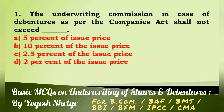Question 1: The underwriting commission in case of debentures as per the Companies Act shall not exceed — (a) five percent of issue price, (b) ten percent of issue price, (c) two point five percent of the issue price, (d) two percent of the issue price. Answer: The underwriting commission in case of debentures shall not exceed 2.5 percent of the issue price. Answer C.